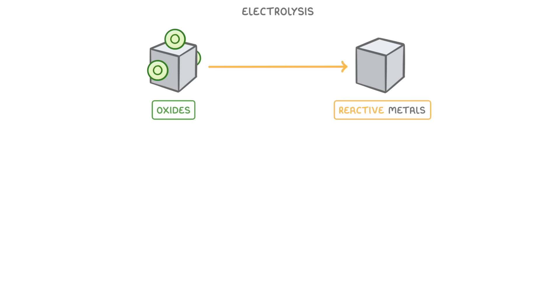In today's video we're going to see how we can use electrolysis to extract reactive metals from their oxides, by first melting them into their molten ionic compounds.